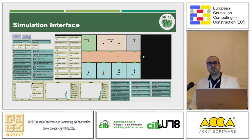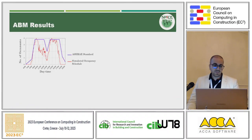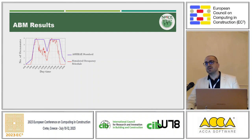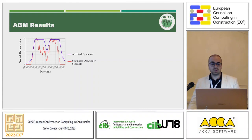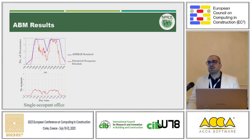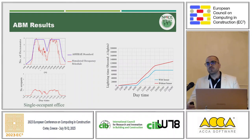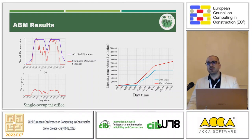The green boxes are the inputs we defined for this simulation and the yellow boxes are the outputs. The results of agent-based modeling show our dynamic schedule in red lines compared to the ASHRAE standards that most energy simulation tools in the U.S. use. For each office, we derived an average occupancy from our inputs and then the amount of lighting energy consumption based on the type of lights assumed. In both scenarios — with or without occupancy sensors — results show that with occupancy sensors, lighting energy consumption can be reduced by up to 50%.